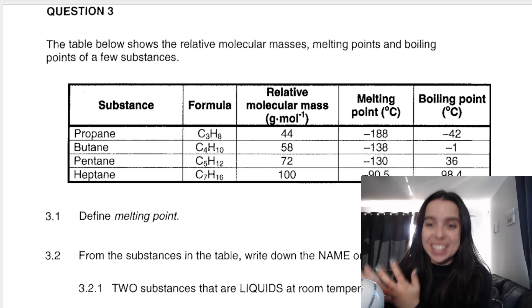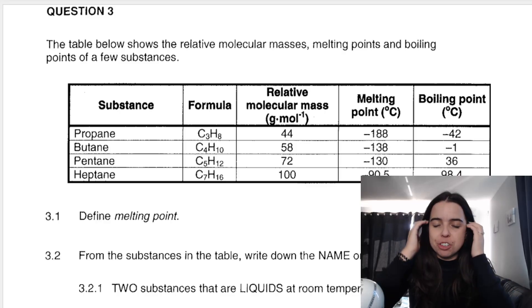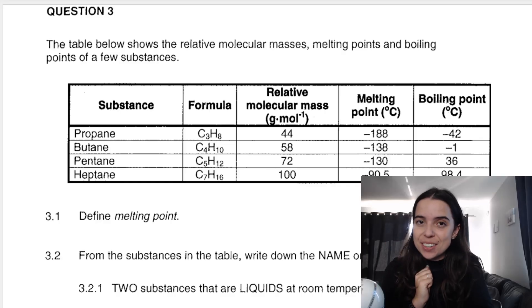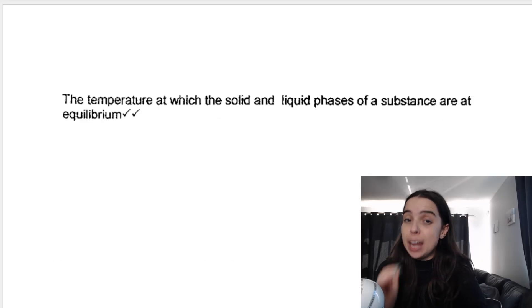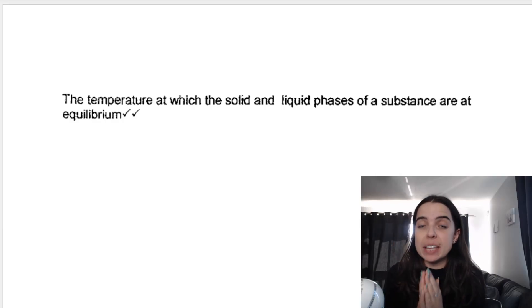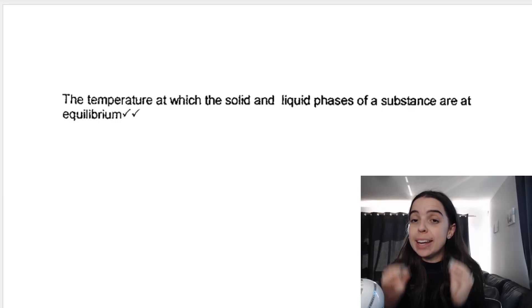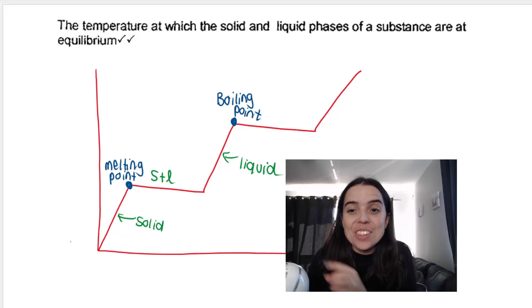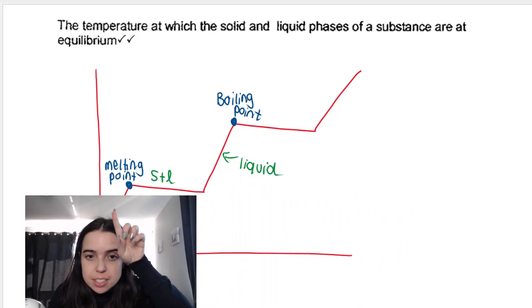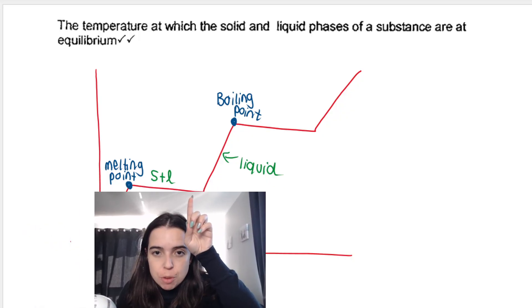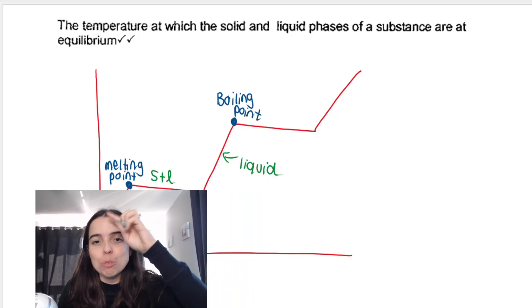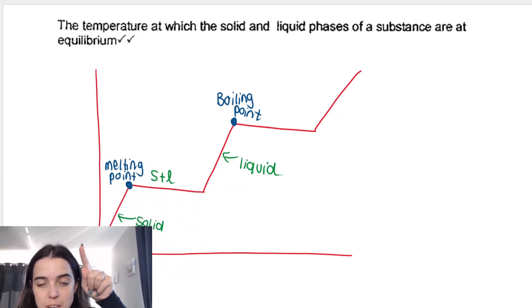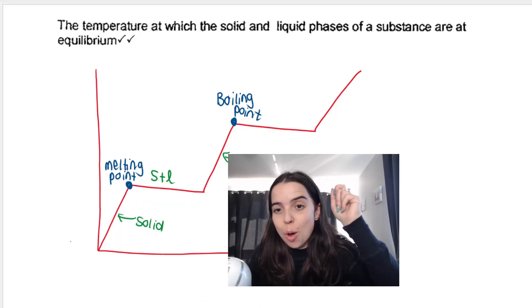We kick start this question with a definition, you'll always get definitions. This one is melting points. Boiling points are a pretty common definition but melting points is just as important. Here's how to define melting points. It is the temperature at which the solid and liquid phases of a substance are at equilibrium. You must say temperature, okay? Both solid and liquid phases of the substance are present during melting. If you can recall from last year this is the heating curve. You can see here's the melting point and at the melting point where temperature remains constant. This axis over here was temperature and you can see that the solid and liquid phases are present.